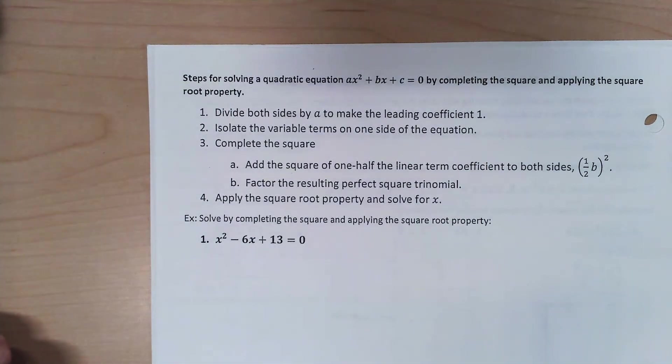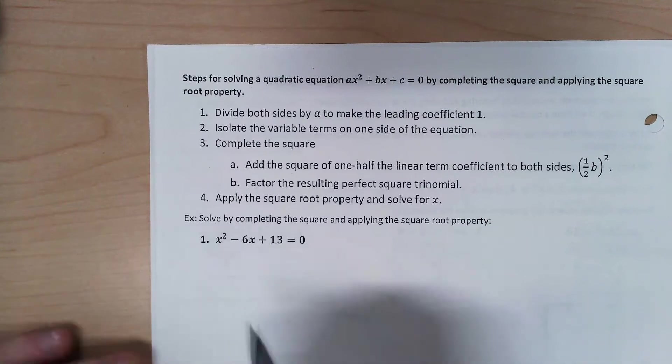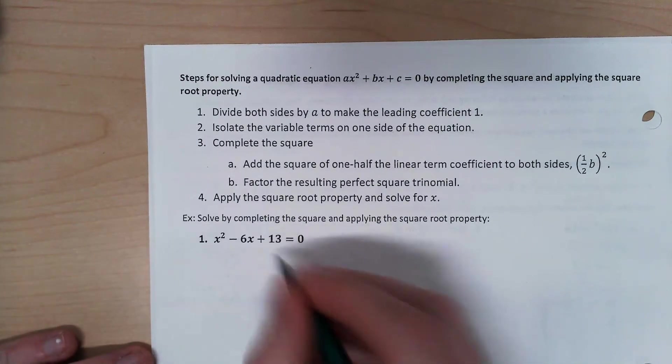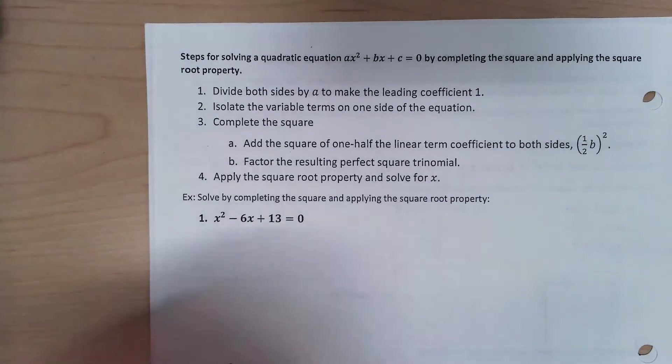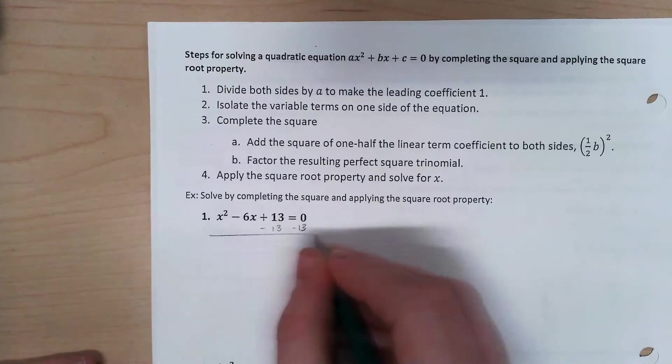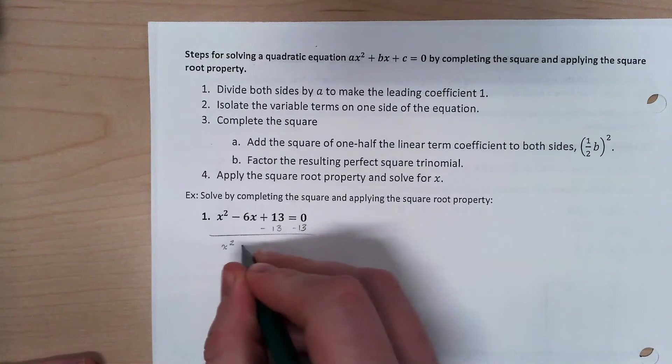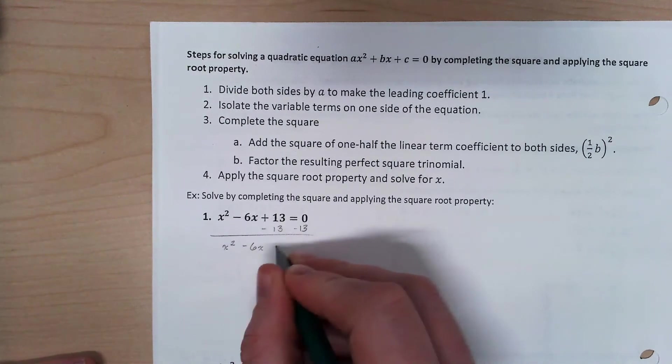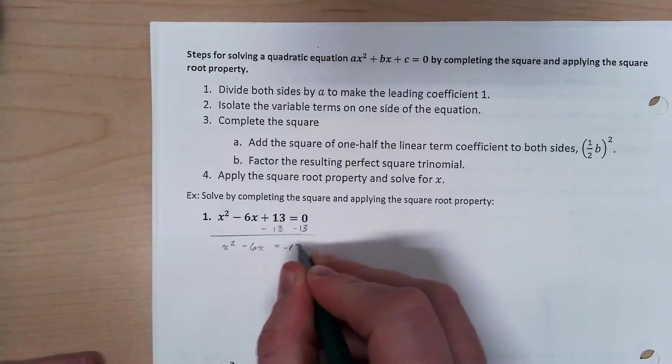Next we're going to isolate the variable terms on one side of the equation. So what this means here is this piece that's c, this piece that doesn't have a variable on it, we're going to move that to the other side. Because we need to be able to choose our c value for ourselves when we're completing the square.